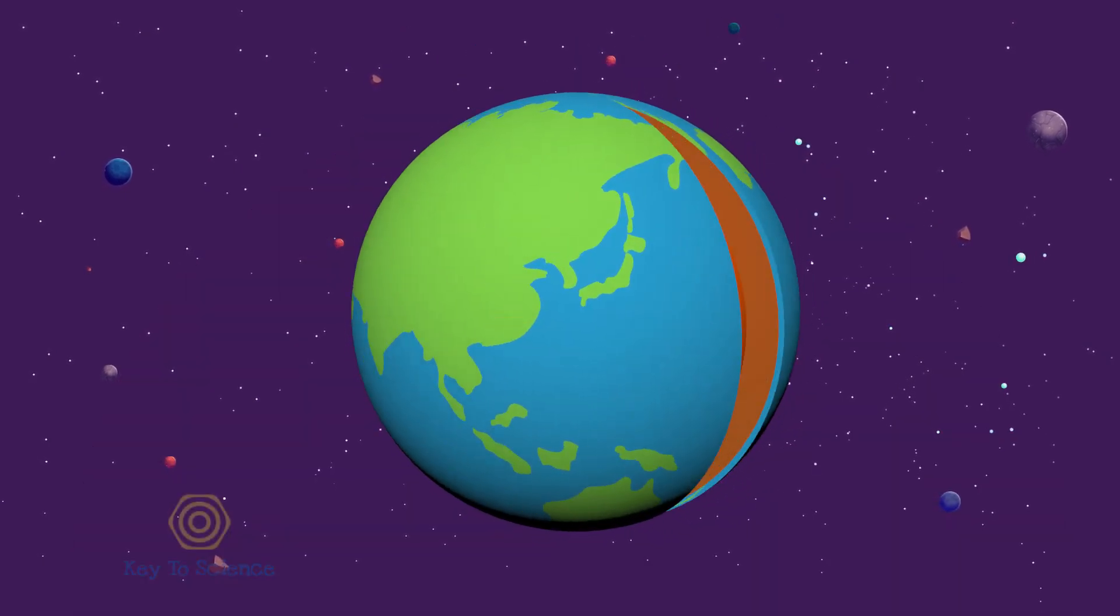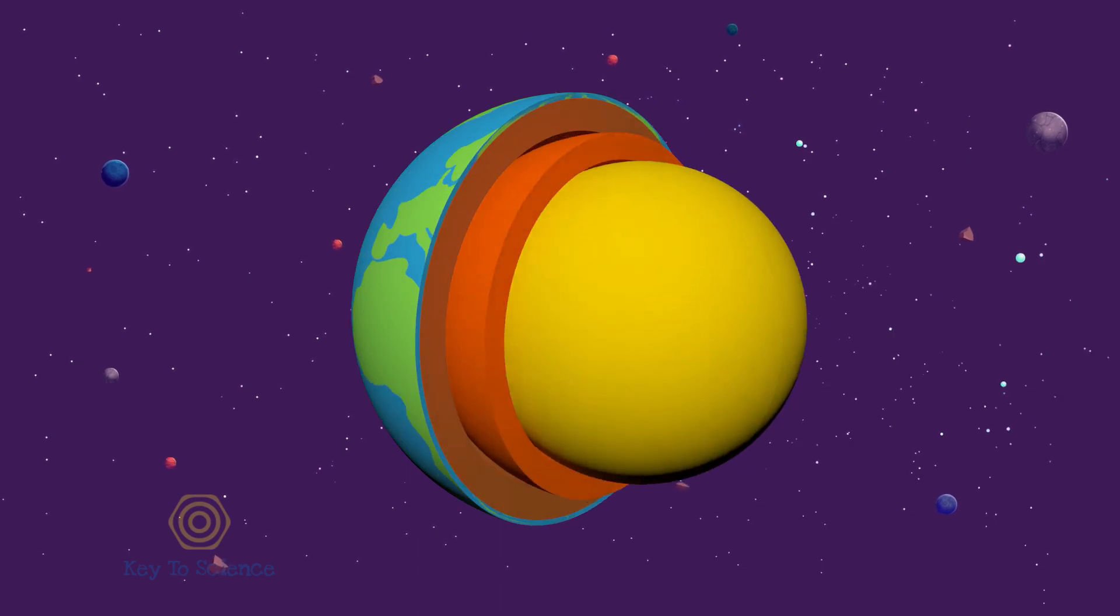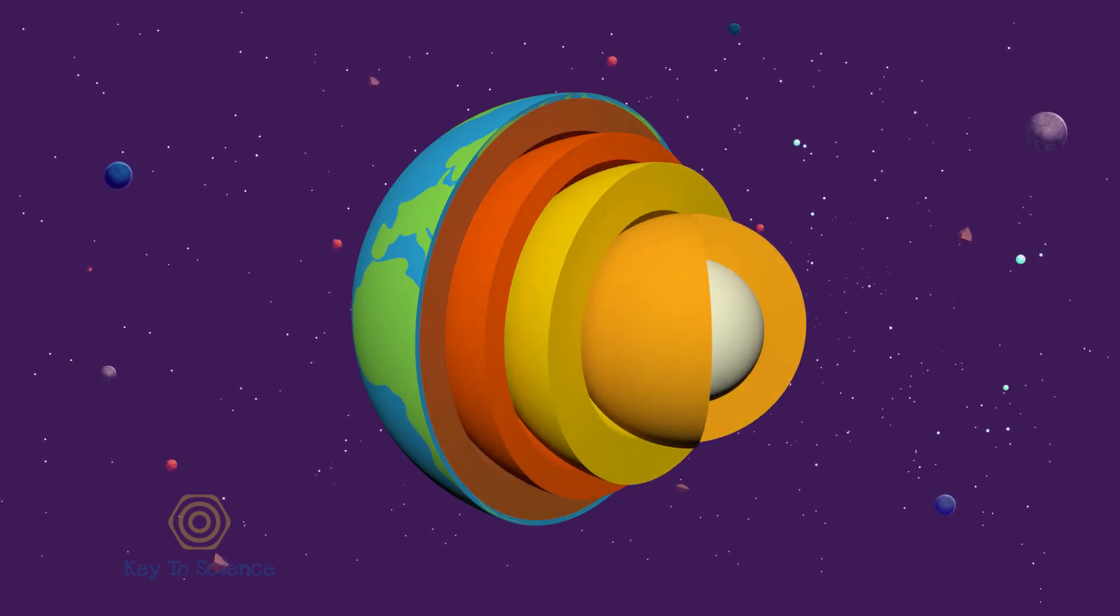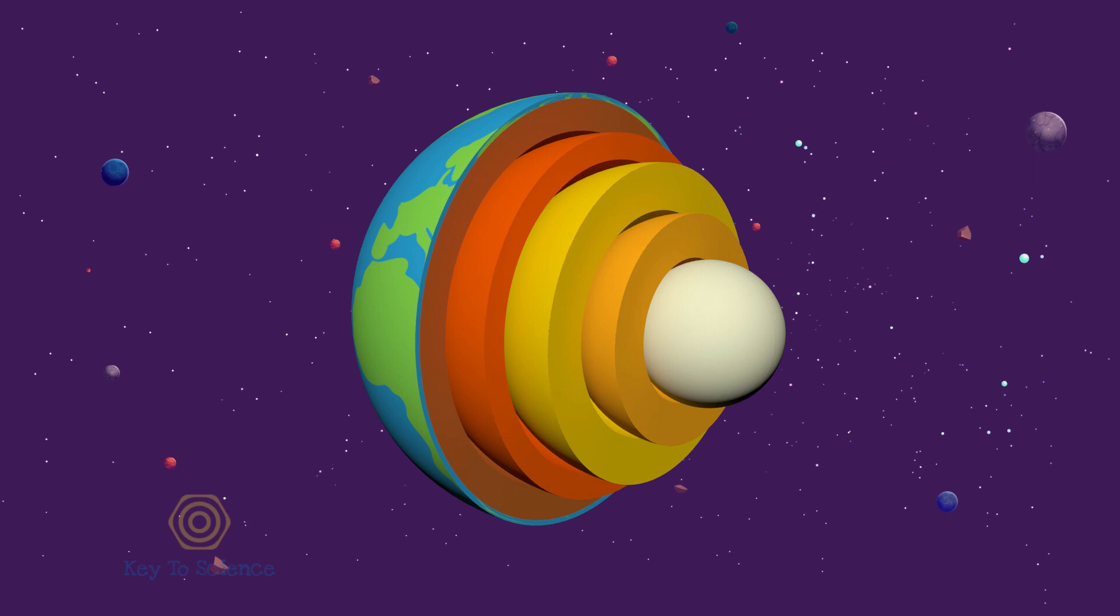To understand this phenomenon, we'll consider Earth as a collection of concentric spheres. Let's assume the Earth consists of five spheres. Four of them are hollow spheres, and the smallest one is solid.